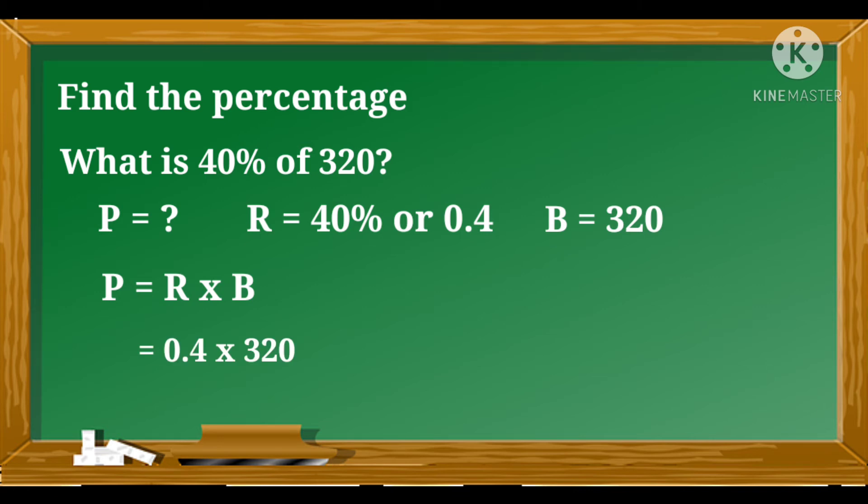We will multiply 320 by 0.4. So, zero times four is equal to zero. Two times four is equal to eight. Three times four is equal to twelve.